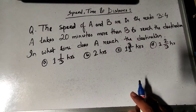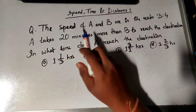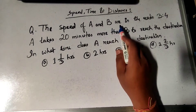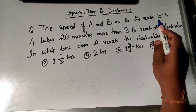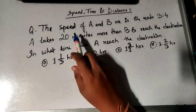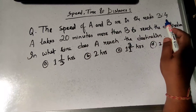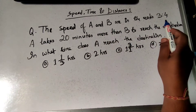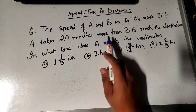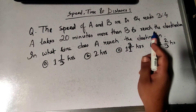The speeds of A and B are in ratio 3 to 4. A takes 20 minutes more than B to reach the destination. In what time does A reach the destination?